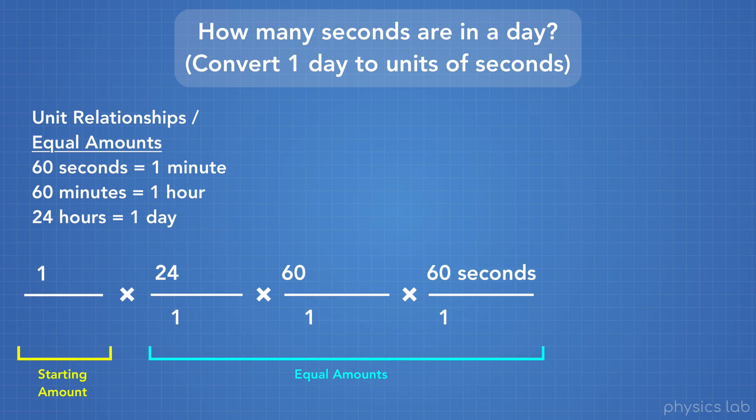Next, all we have to do is multiply these fractions to get our answer. We do that by multiplying all of the numbers on top, which gives us our top number, or numerator, and then multiplying all of the numbers on the bottom, which gives us our bottom number, or denominator.